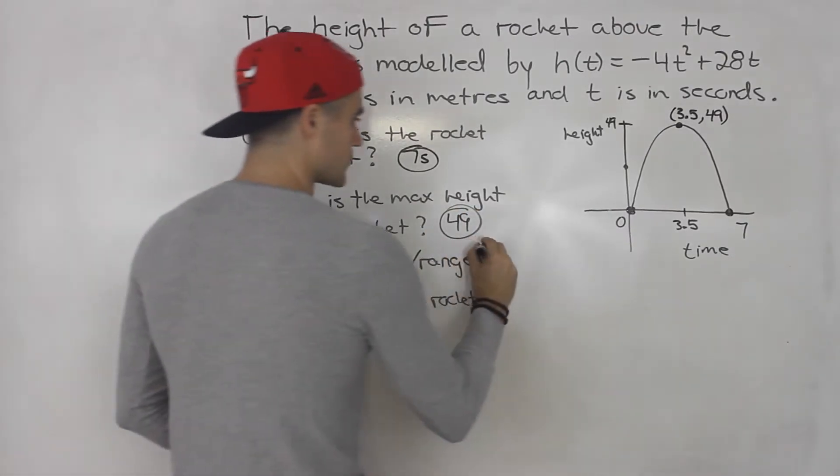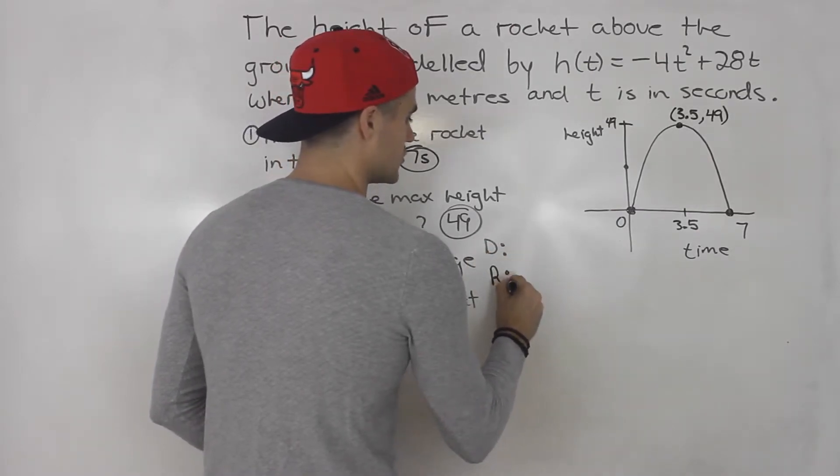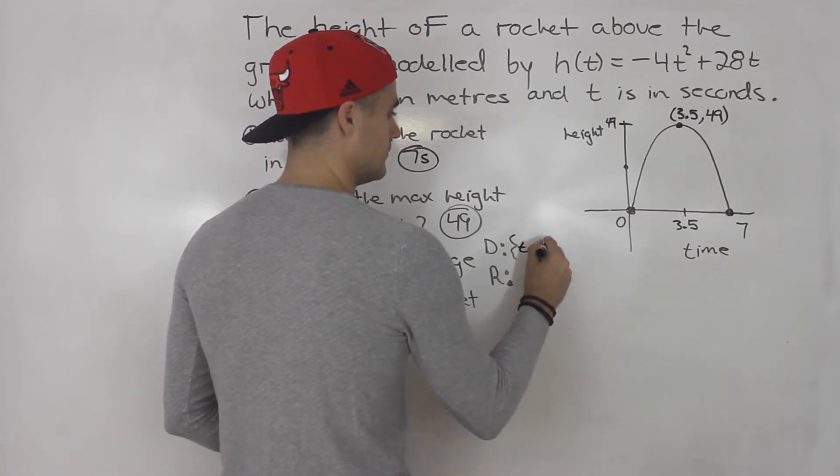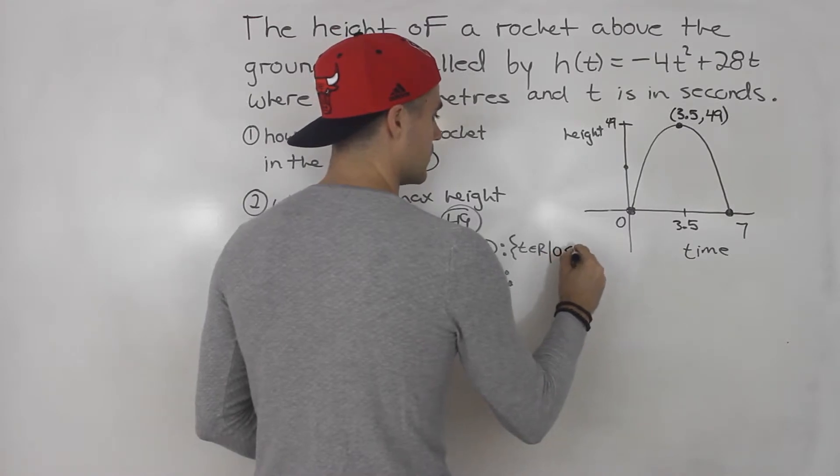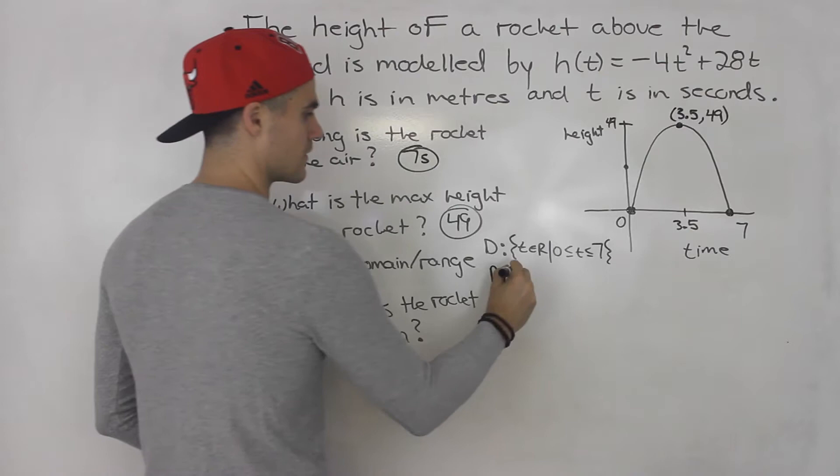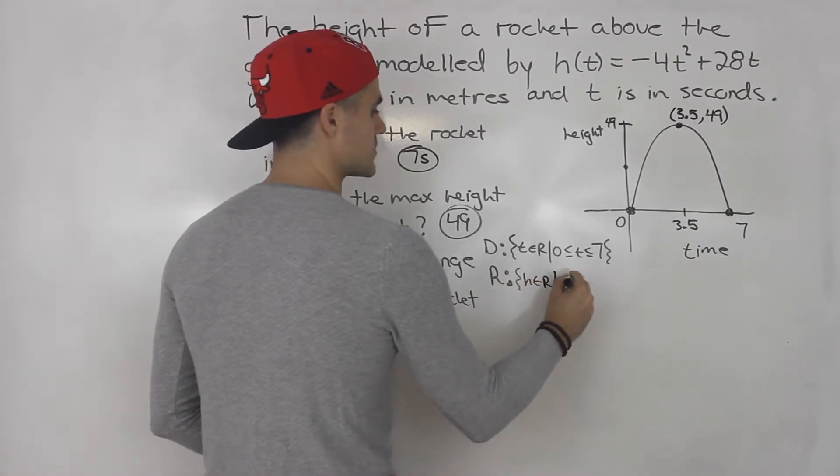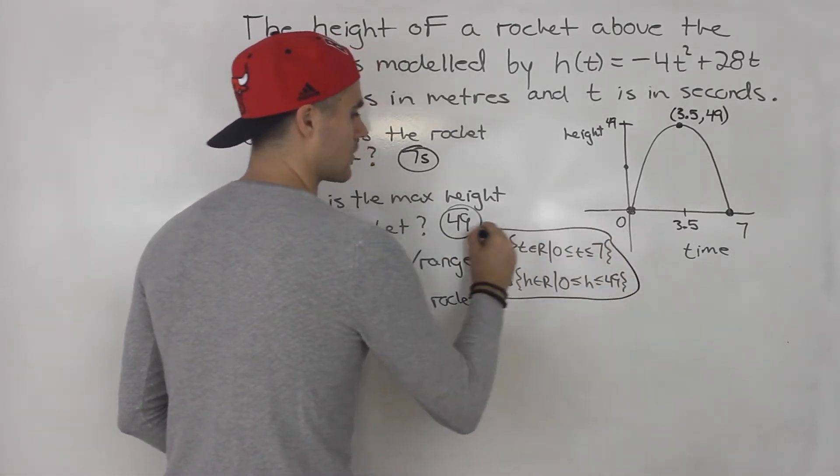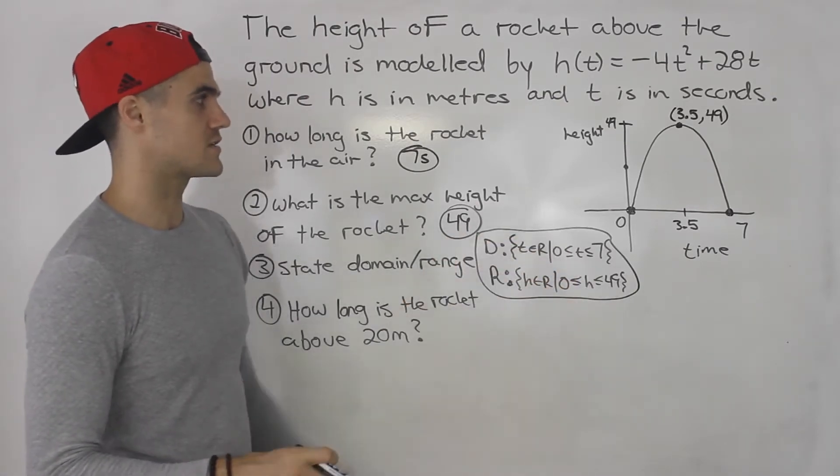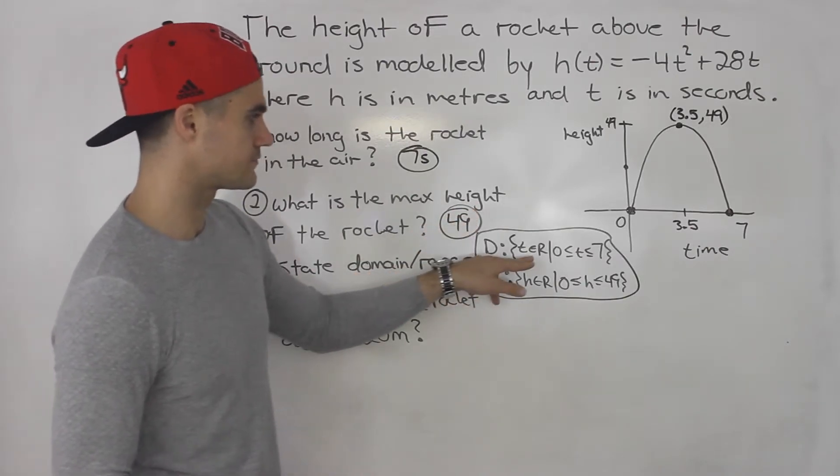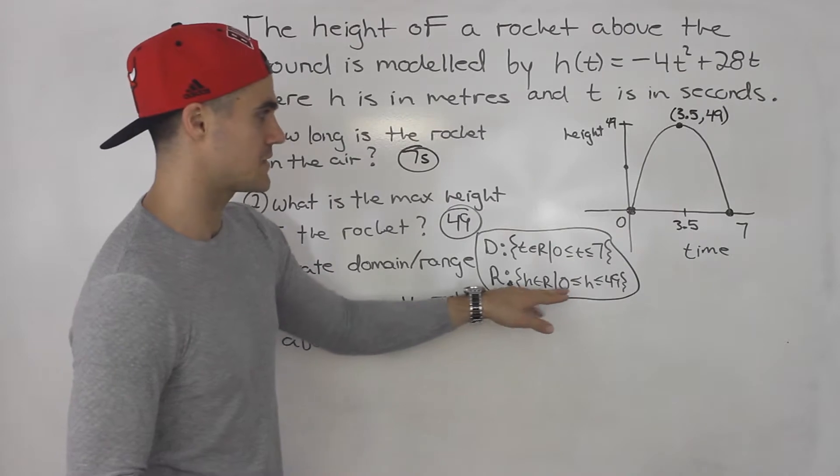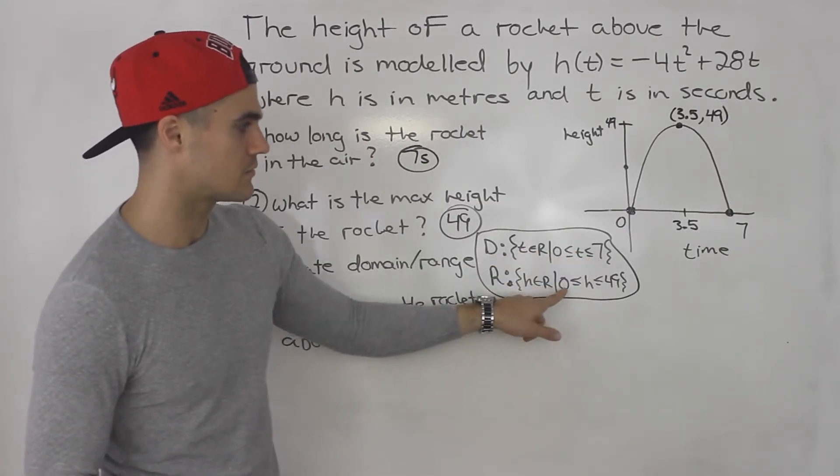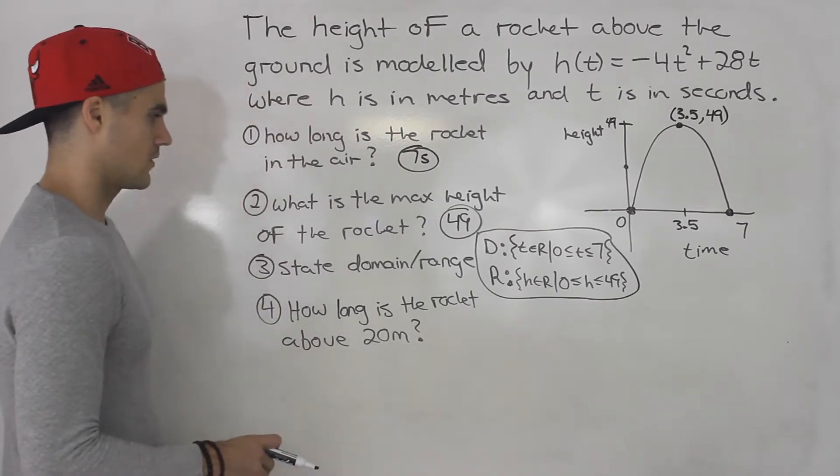State the domain and range. Now, because this is a word problem, usually the domain and range of a quadratic is going to be a little bit more restricted. So the domain in this case is time can be anything as long as it's between 0 and 7. And then range, height can be anything as long as it's between 0 and 49. So that there is the domain and range for this word problem. Notice how much more restricted it is versus if it was just a regular quadratic. If it was just a regular quadratic, the domain would just be all real numbers, and the range would just be the height has to be less than or equal to 49. But because height can't be negative, time can't be negative, we got to make it between 0 and 7, between 0 and 49. So that's the domain and range.